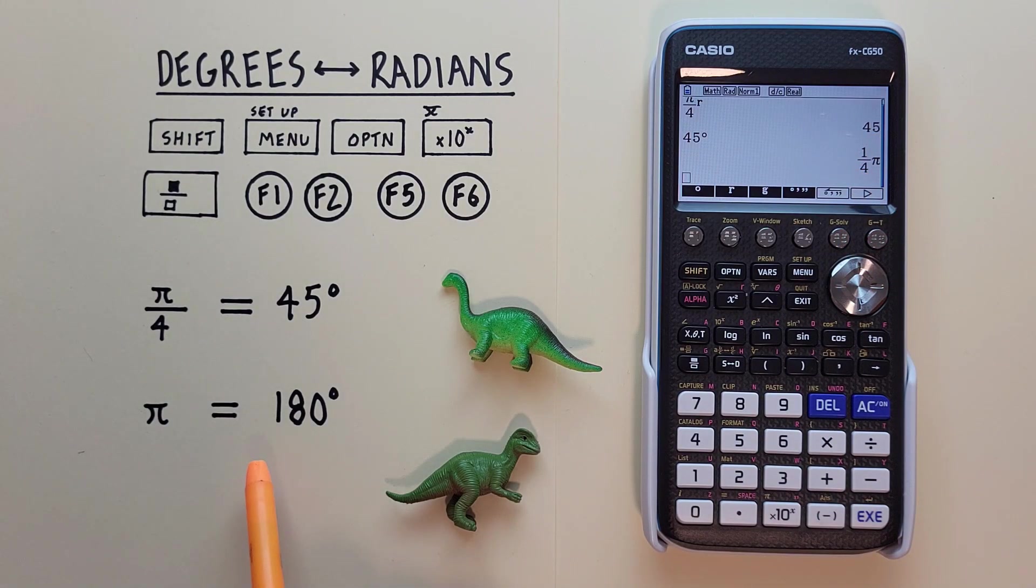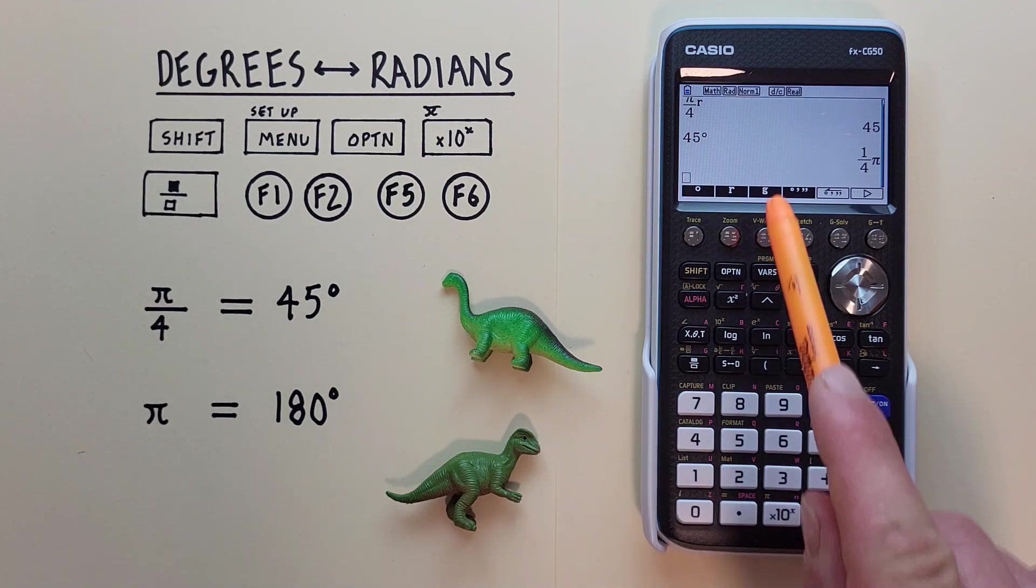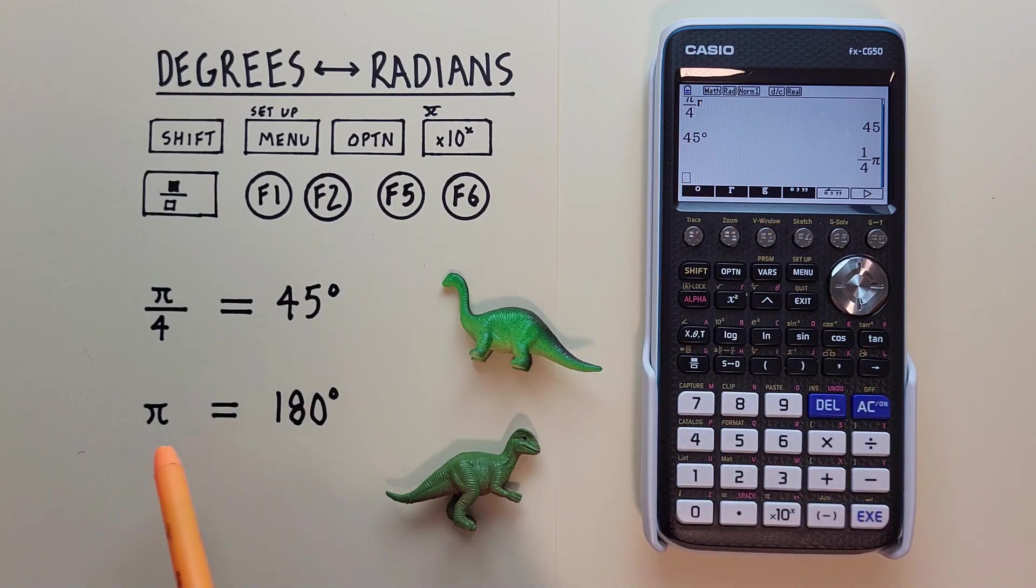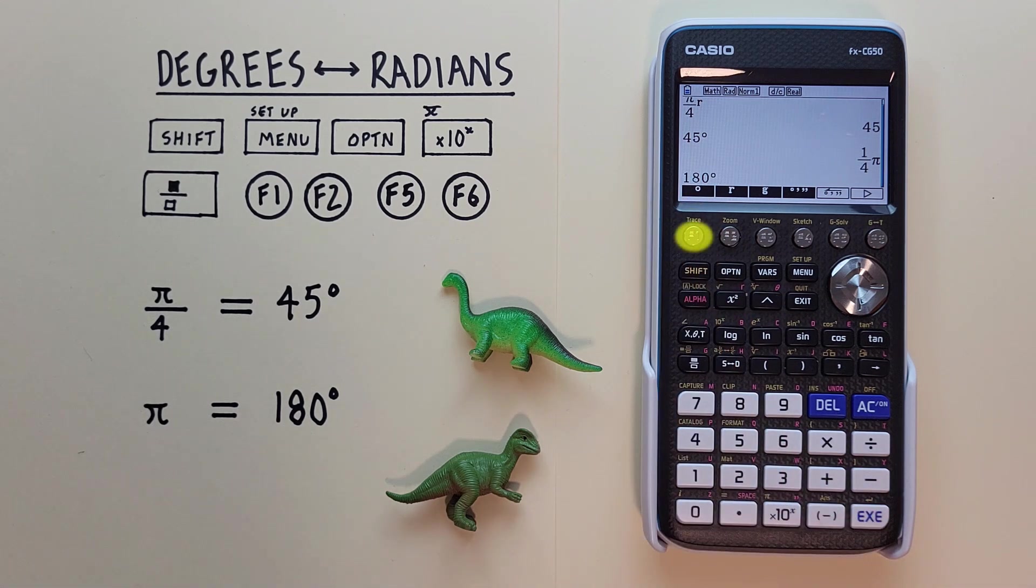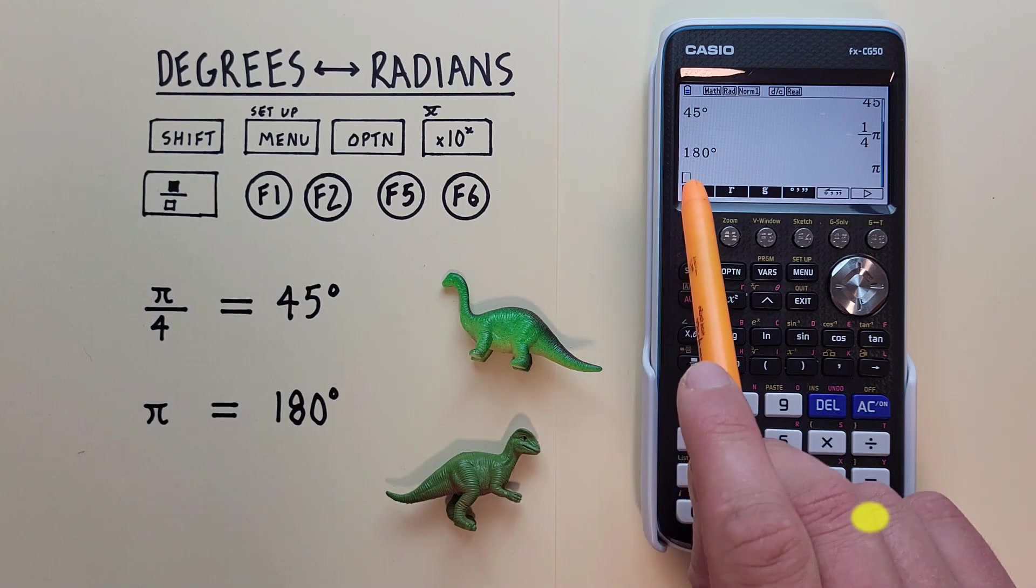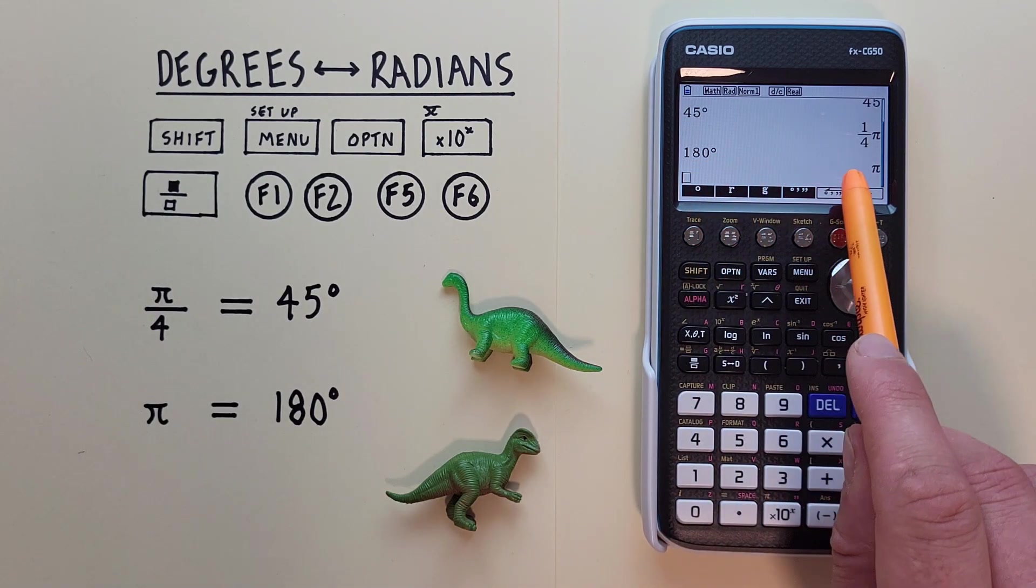Another example, let's say we're given 180 degrees and want to convert that to radians. Well, since we're already in radians mode, which is what we want to get, we can enter our degrees, which is 180. And then tell our calculator these are degrees. And hit EXE. And see that we get 180 degrees is equal to pi.